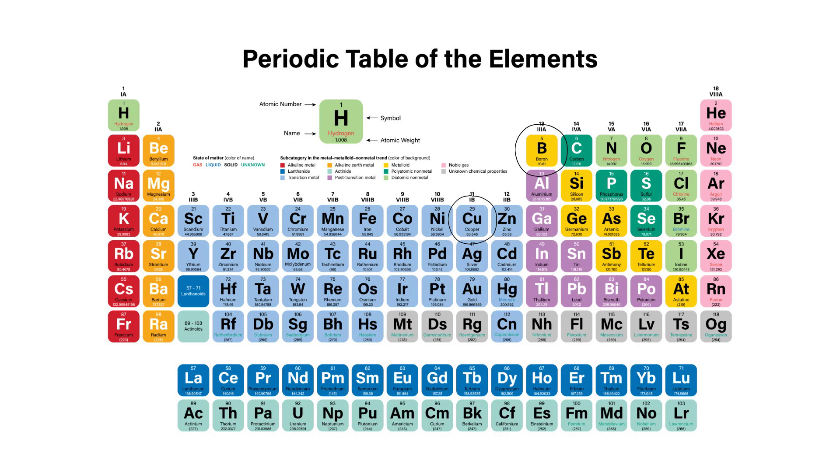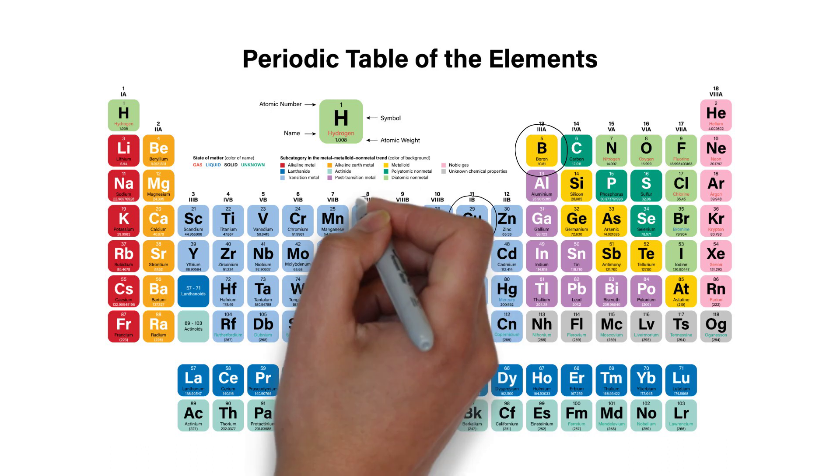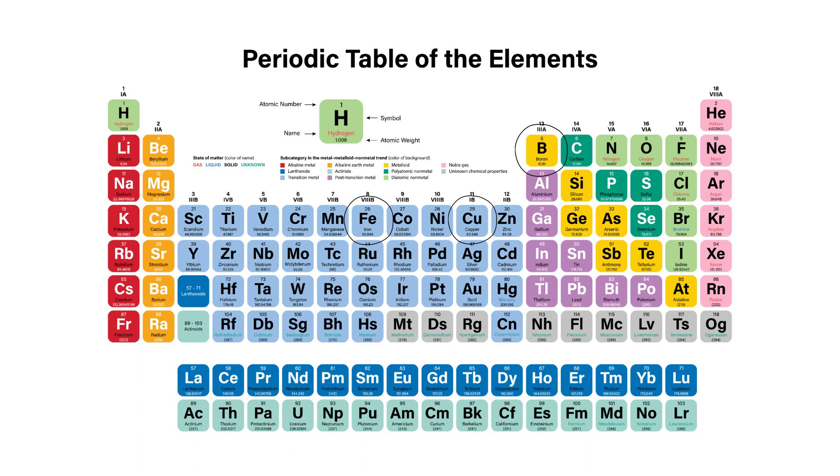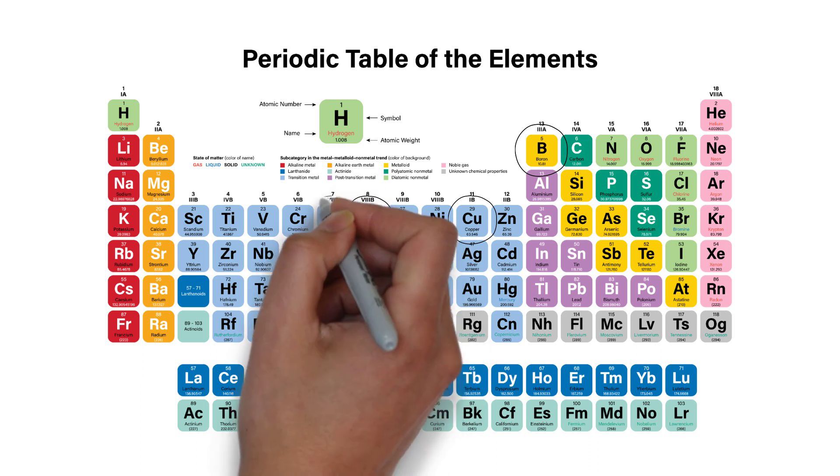Copper is essential in protein formation and for enzyme activation. Iron is important in chlorophyll formation, respiration, and energy transfer.